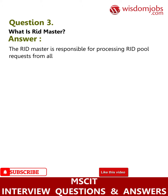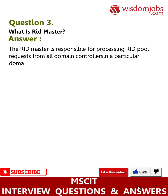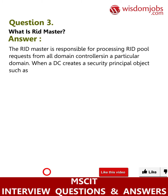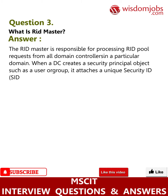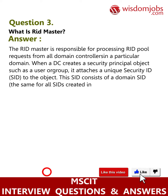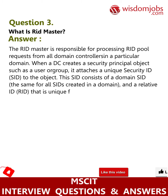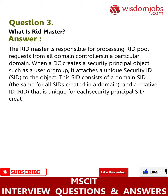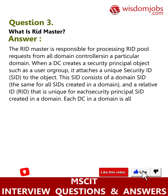When a DC creates a security principal object such as a user or group, it attaches a unique Security ID (SID) to the object. The SID consists of a domain SID — the same for all SIDs created in a domain — and a Relative ID (RID) that is unique for each security principal created in a domain. Each DC in a domain is allocated a pool of RIDs that it is allowed to assign to the security principals it creates.